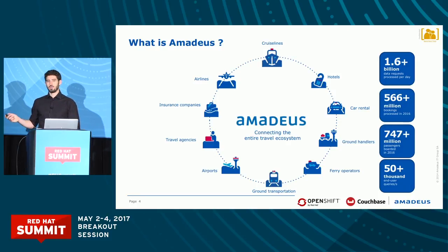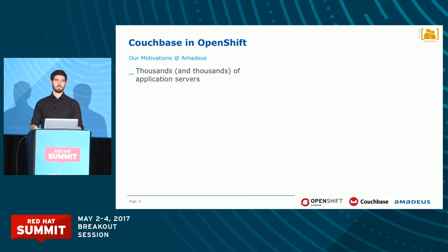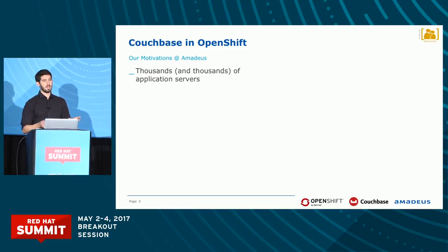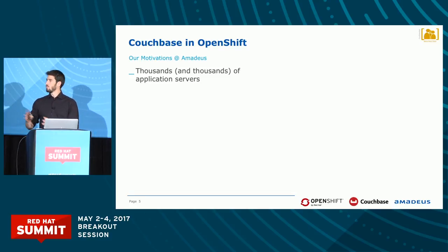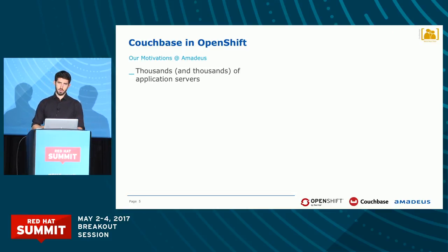You can imagine that to run all these applications and to handle all this traffic, we have thousands and thousands of application servers. Most of them are running in our data center in Germany. We also have some applications running in a data center in the US, and we are also running some things on the cloud. We have three operational sites: one in Germany, one in the US, and one in Australia. This way we can provide global support to our customers.